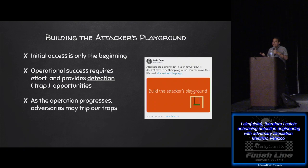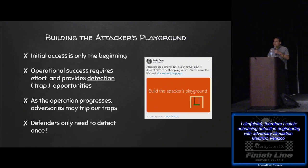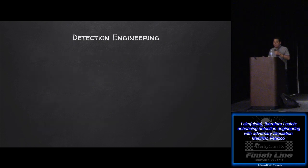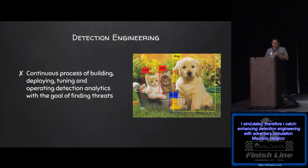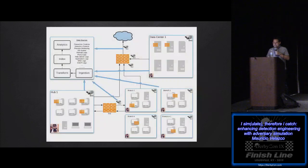You've probably all heard: attackers only need to be right once, defenders need to be right all the time. Well, we're turning the tables. Now defenders only need to detect once — attackers just need to make one mistake and we'll catch them. The goal is not to prevent the initial foothold; the goal is to prevent operational success. We can catch them as they're trying to get to their target data. And a big part of the attacker's playground is detection engineering — the continuous process of deploying, tuning, and operating detection analytics with the goal of finding threats.